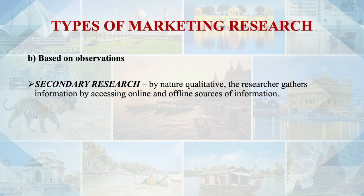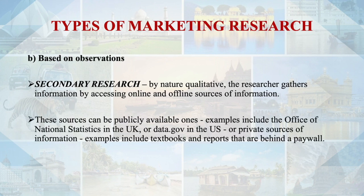Secondary research is qualitative in nature. The researcher gathers information by assessing online and offline sources of information. These sources can be publicly available, such as the Office of National Statistics in the UK or data.gov.in in the US, or private sources such as textbooks and reports behind a paywall. Researchers often use more than one research design — starting with secondary research for background, then a focus group, and finally a full nationwide survey.